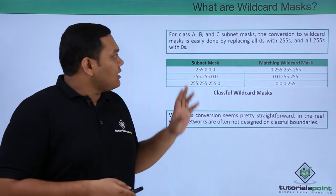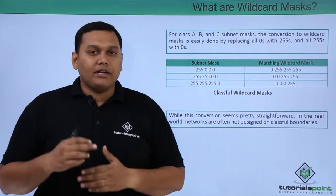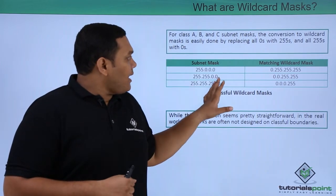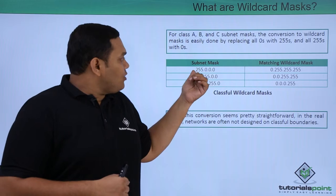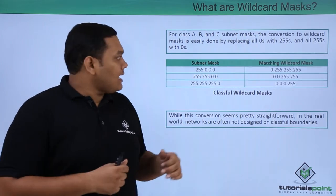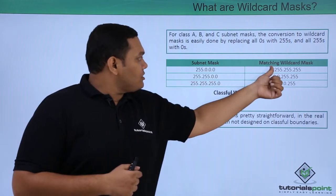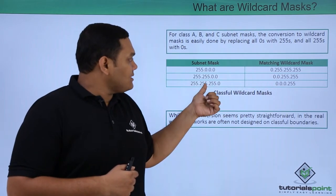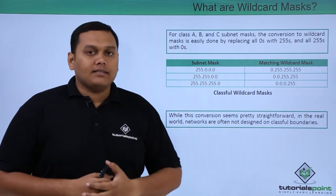We will now look at class-wise wildcard masks for Class A, Class B, and Class C, and how they are divided for matching. The subnet mask for Class A is 255.0.0.0, and the wildcard mask is exactly its inverse. The same applies for Class B and Class C — these are the classical wildcard masks.